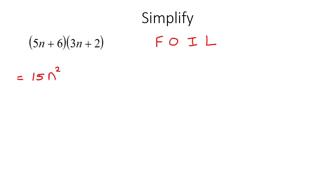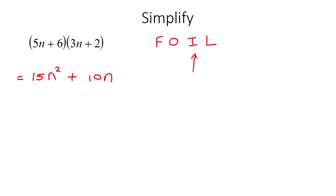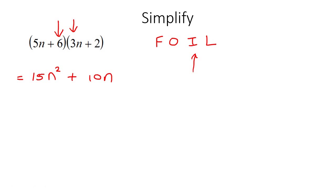The next step is O, which stands for outer multiplied by outer — so the one on the outside and the one on the outside. That's going to give you 10n. The next step is I, which stands for the inner — the inner one multiplied by the inner one. These two are on the inside whereas those two are on the outside. That's going to give you 18n.